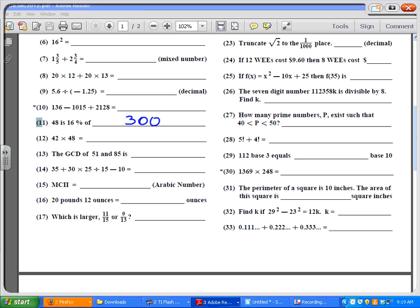42 times 48 is an interesting problem. Notice that the ones add up to 10, 2 plus 8, and your tens digit is the same. Whenever you have that, you have a specific shortcut. 2 times 8 is 16, and then you add 1 to this 4, so you have 4 times 5 is 20. So that's 2016.